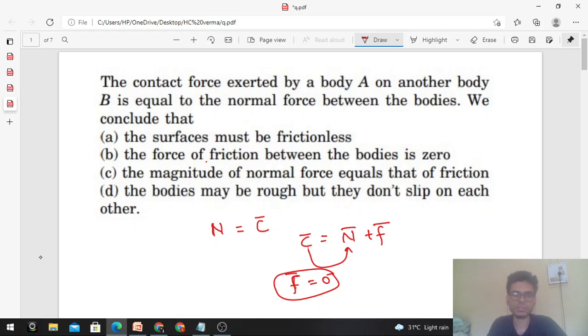Let's check the options. The first says the surfaces must be frictionless. Okay, so if the friction force is zero, can we say that the surfaces are frictionless? Maybe the surfaces are rough but the bodies do not have the tendency to move relative to each other, so friction won't act. Whenever two bodies are rough and placed in contact with each other, the friction between them may still be zero.